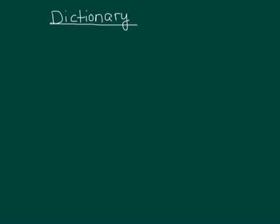A dictionary is just a series of key value pairs. A dictionary is a collection of key value pairs.